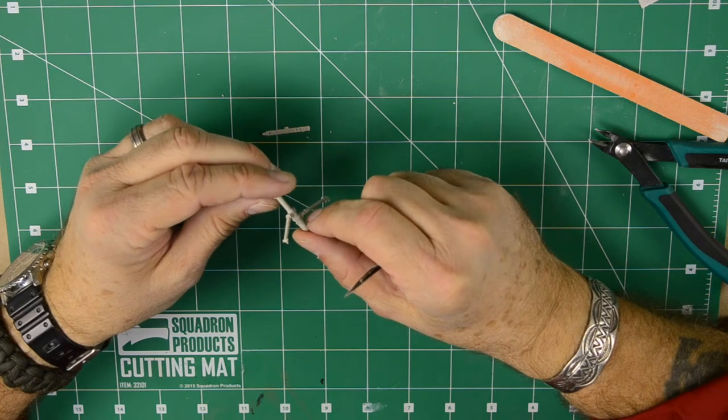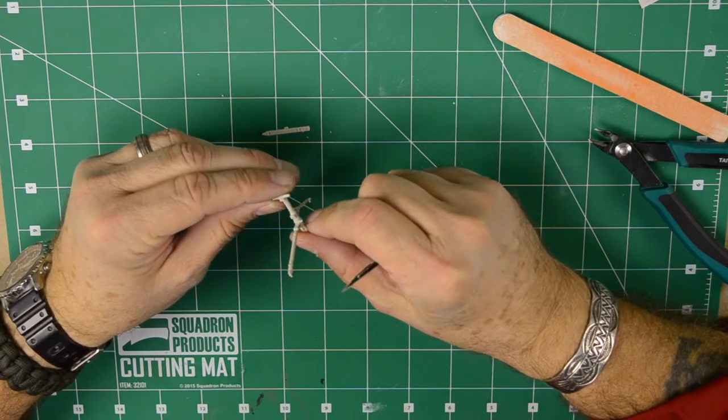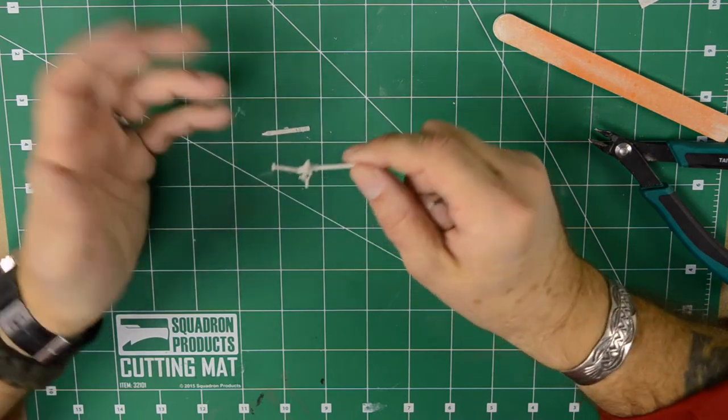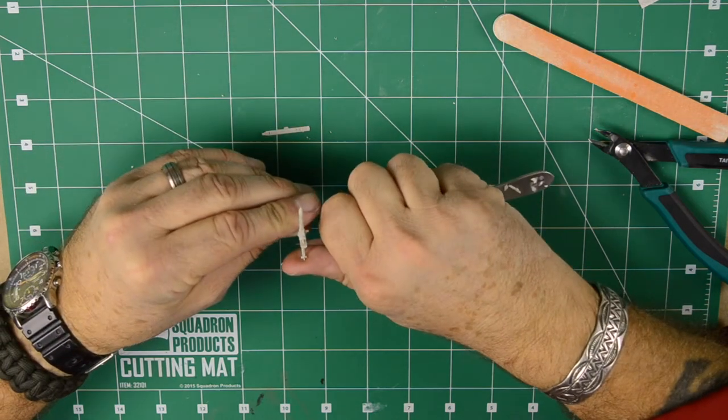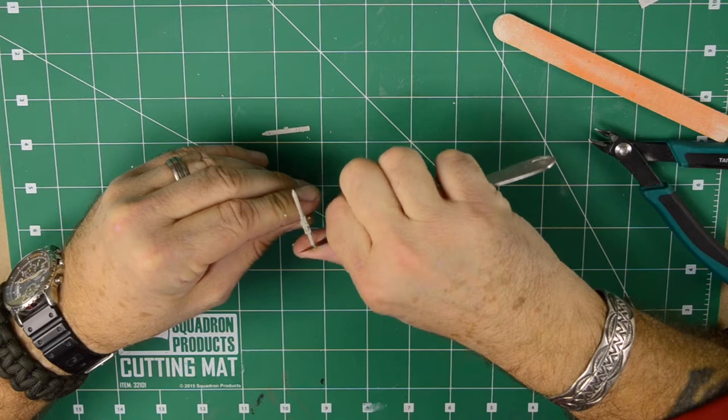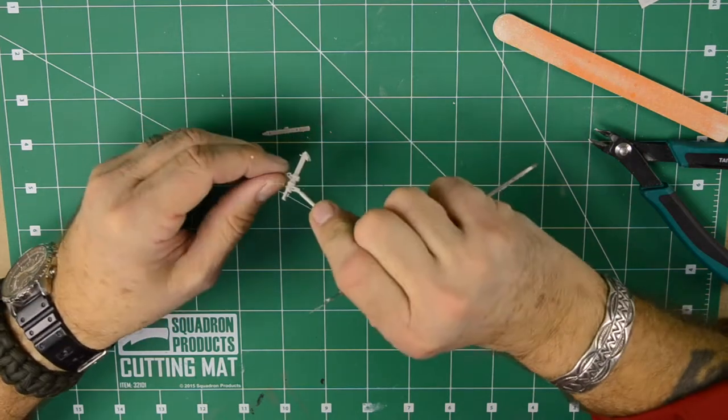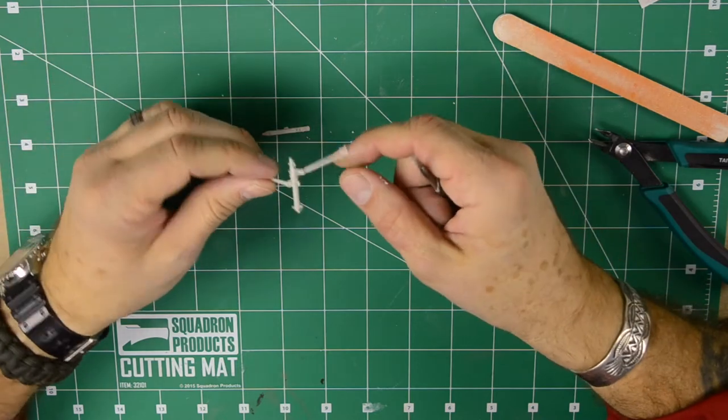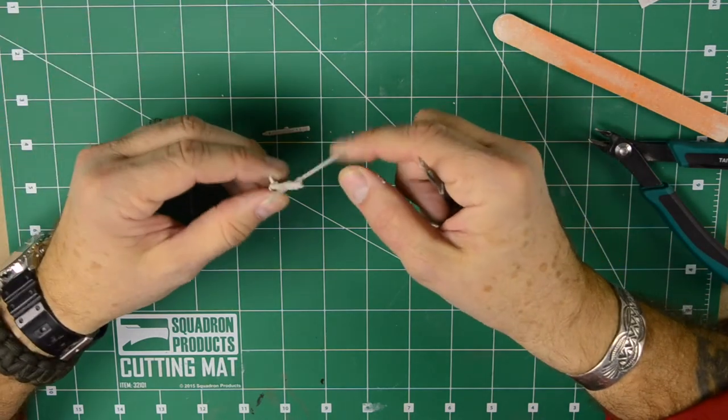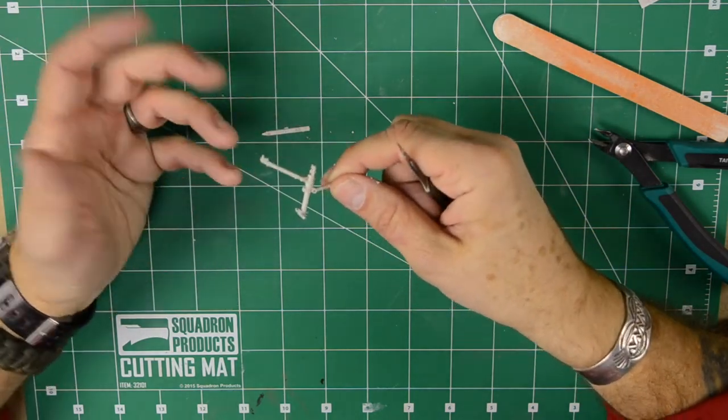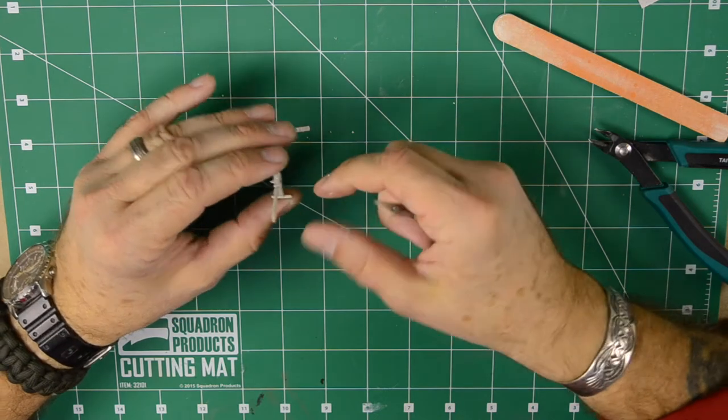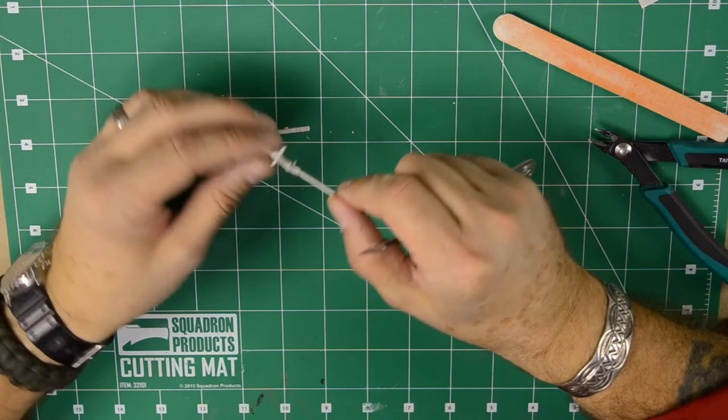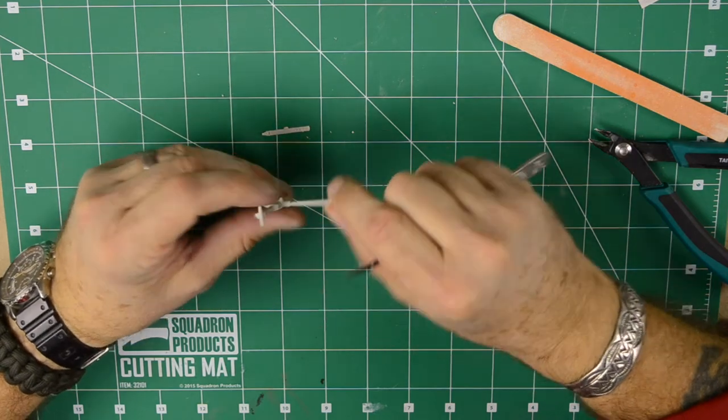Cleaning up landing gear is always one of the tasks I dread because of the seam line. In this case there is a seam line but it's very minimal, so it's not going to take much effort at all to clean that up. With the quality of Tamiya, there is hardly any cleanup necessary.